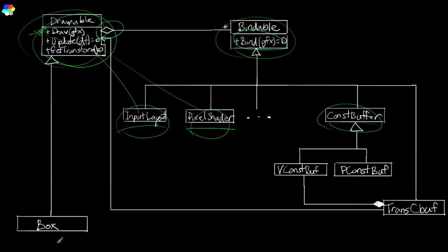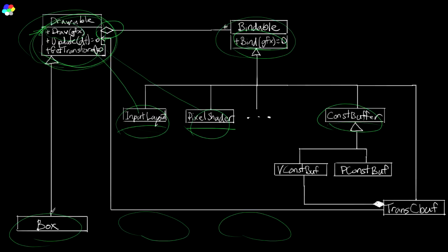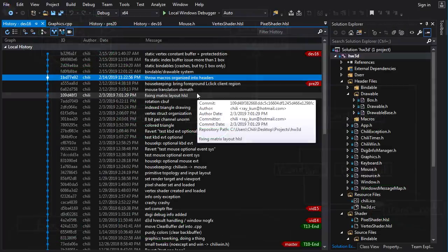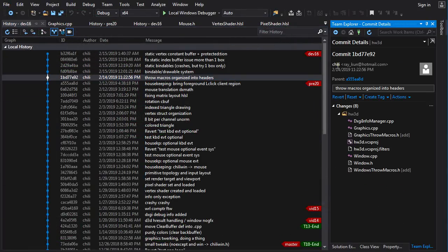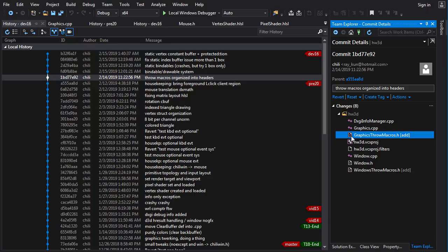You also get reduction of boilerplate copy-paste code because the draw function is implemented in Drawable and is the same for any entity that inherits from it — you don't have to implement a draw function for Box or Sphere separately. There's a little additional complexity with the transformation constant buffer, but we'll cross that bridge when we come to it. The first thing I did was a simple organizational change: I created header files to store the macros we use for throwing exceptions — the graphics macros and Windows macros.